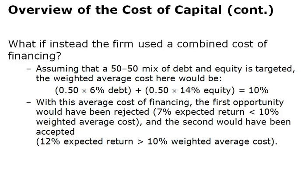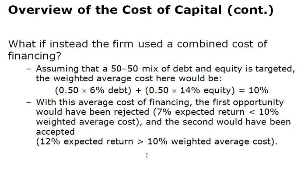What if there was a mix instead of all debt or all equity? With 50% debt and 50% equity, we take 50% times 3% debt plus 50% times 14% equity, giving a weighted average cost of capital of 10%. Using this weighted average, we would actually reject investment A—whose return of 7% is less than 10%—and accept investment B, whose return of 12% exceeds 10%. Using a weighted average produces the opposite result.